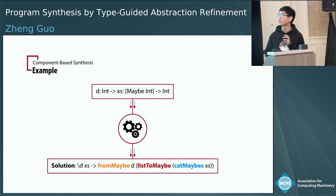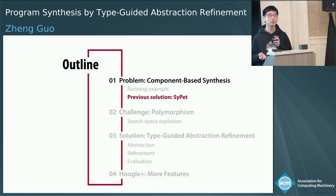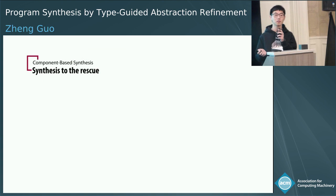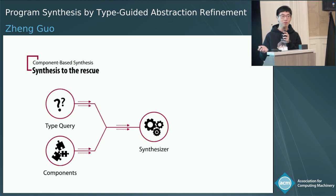But the question is: we have the query, and we know what we want, but how can we find it from the components? That's why we need program synthesis. Before I introduce our solution, let me introduce a previous work called SciPad, because our work is built upon it. SciPad is a type-directed, component-based program synthesizer. It accepts a type query and components, and after some searching it will return the result program to you.